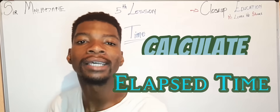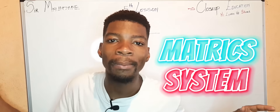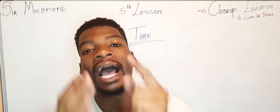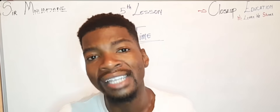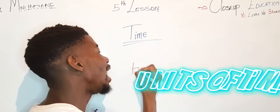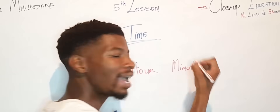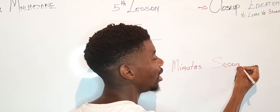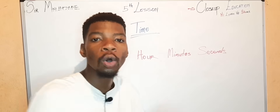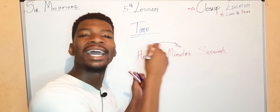We firstly need to understand a matrix system. A matrix system is a system or diagram that will help you understand how to convert time. Time has about three units: it has an hour, it has a minute, and it also has seconds. These are the units of time — hours, minutes, and seconds.